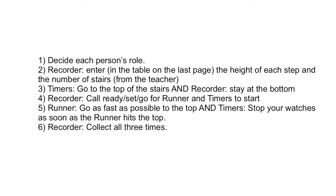Procedure. Step one: decide each person's role. Step two: Recorder, enter in the table on the last page the height of each step and the number of stairs from the teacher. Step three: Timers, go to the top of the stairs; Recorder, stay at the bottom. Step four: Recorder, call ready, set, go for the runner and timers to start. Step five: Runner, go as fast as possible to the top; Timers, stop your watch as soon as the runner hits the top. Step six: Recorder, collect all three times.